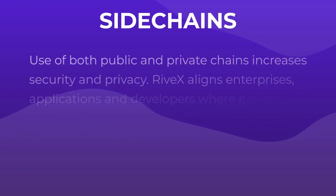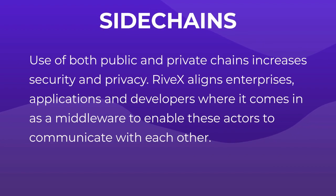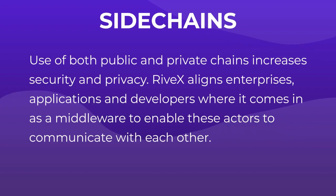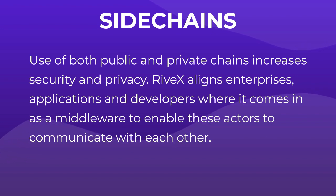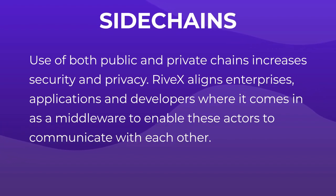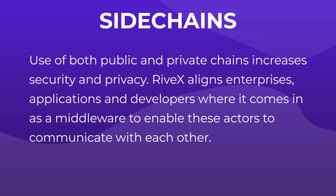Sidechains: The use of both public and private chains increases security and privacy. RiveX aligns enterprises, applications and developers, coming in as a middleware to enable these actors to communicate with each other.